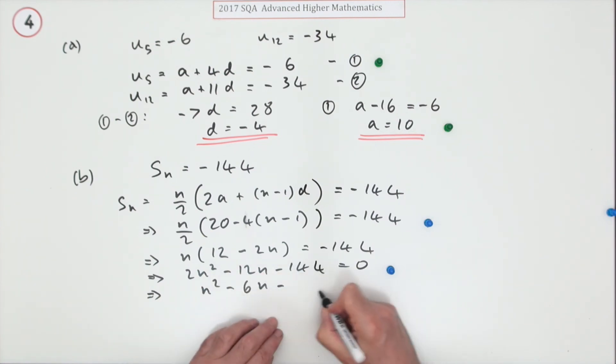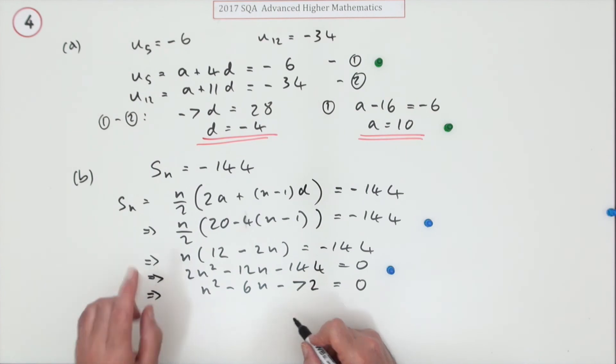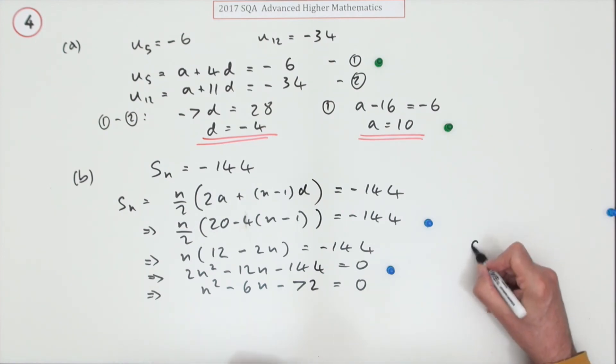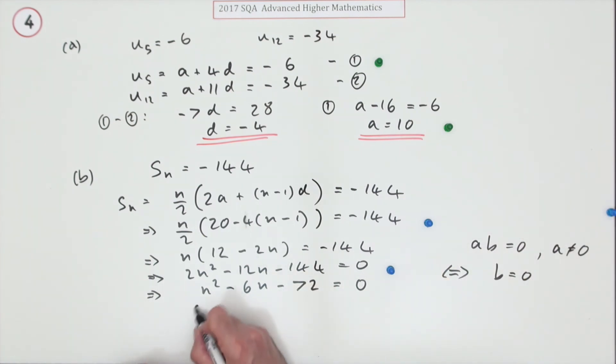Glad I don't see anything anymore like you used to see in the higher marking scheme about don't penalize for dividing by two. No idea where that comes from. If ab equals zero and a is not equal to zero, that means if and only if just b equals zero. Logic.